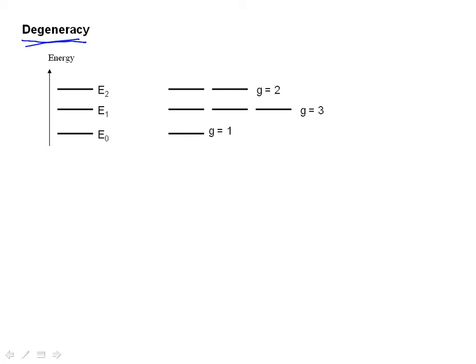And so what physicists use is the word degeneracy for this. Here, the degeneracy, which we use the variable g to represent, here there's only one way to put an electron in state 0, and so the degeneracy is 1. For state 1 here, it turns out that there are three states that have exactly the same energy. So in this case, the degeneracy is 3. For a higher state, E2, it turns out in my example that there are two ways that you can put an electron. An electron can either be here or it can be here. But both of these electrons have the same energy, so the degeneracy is 2.